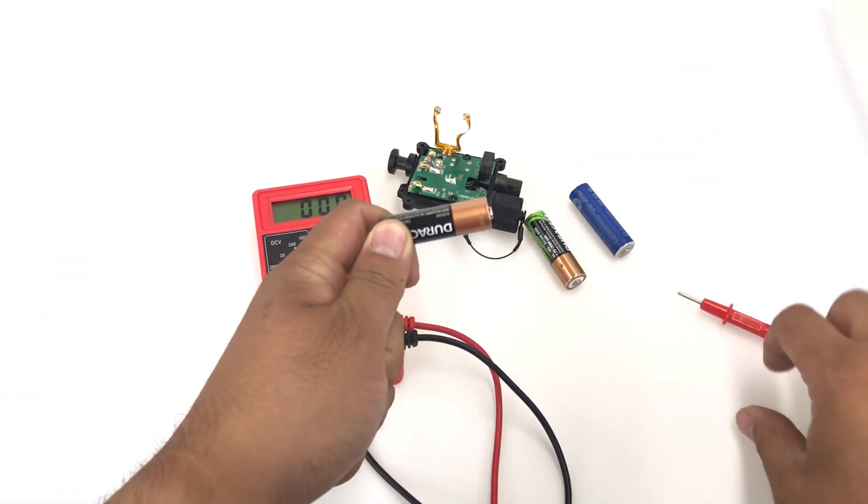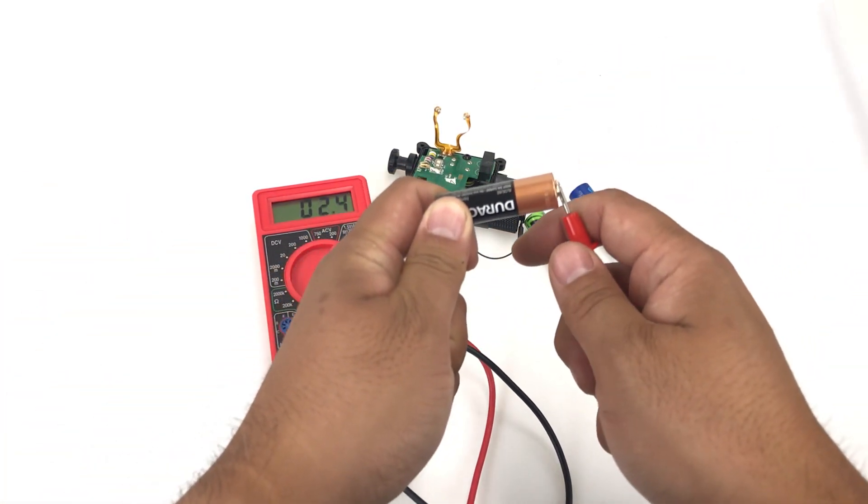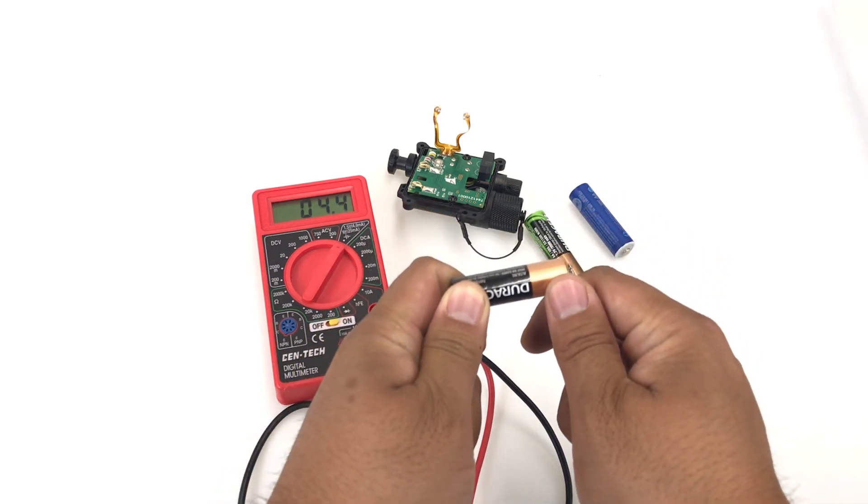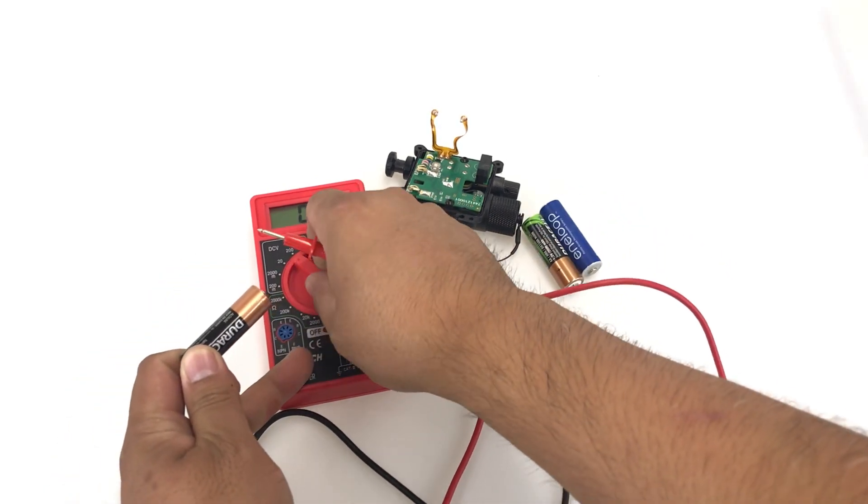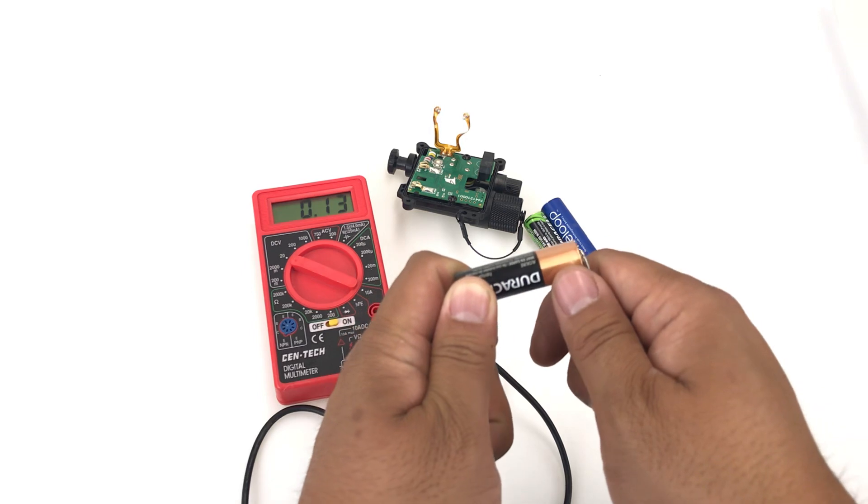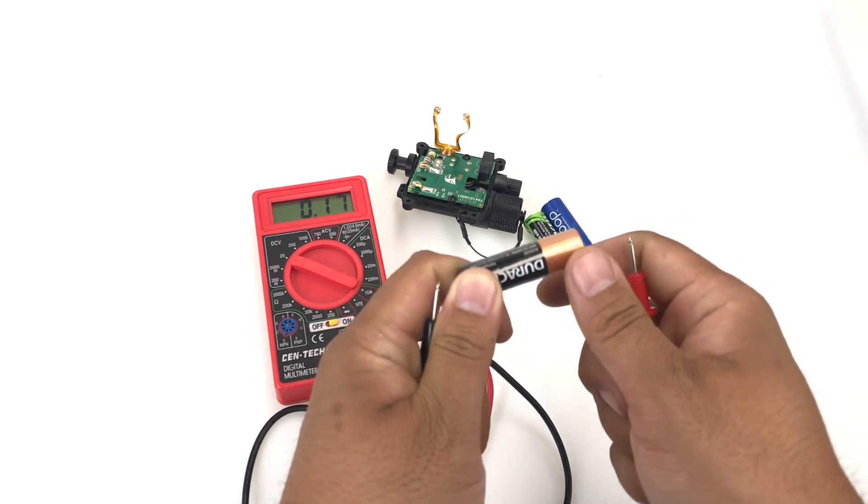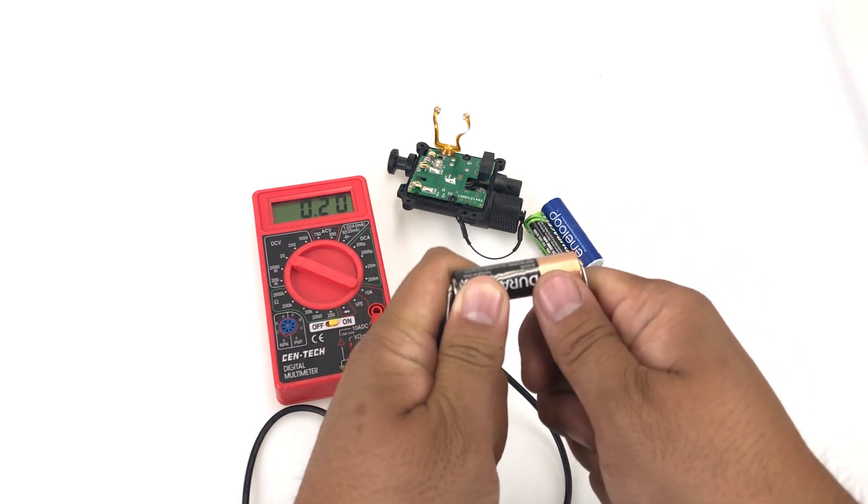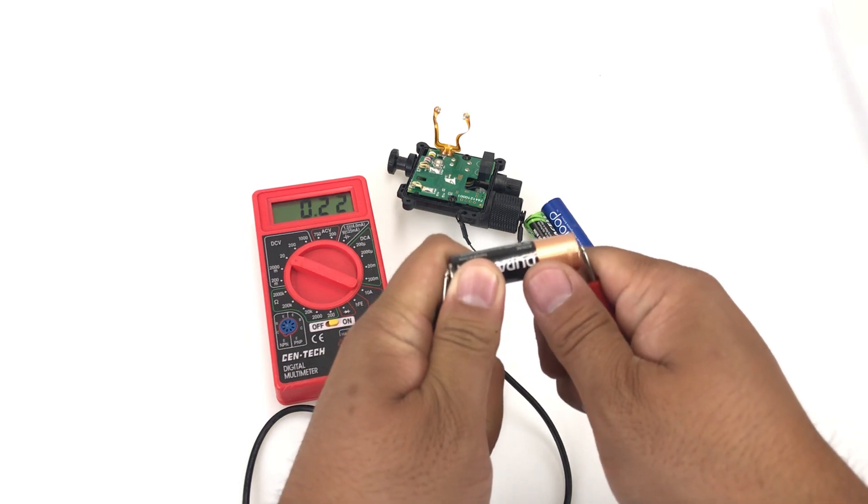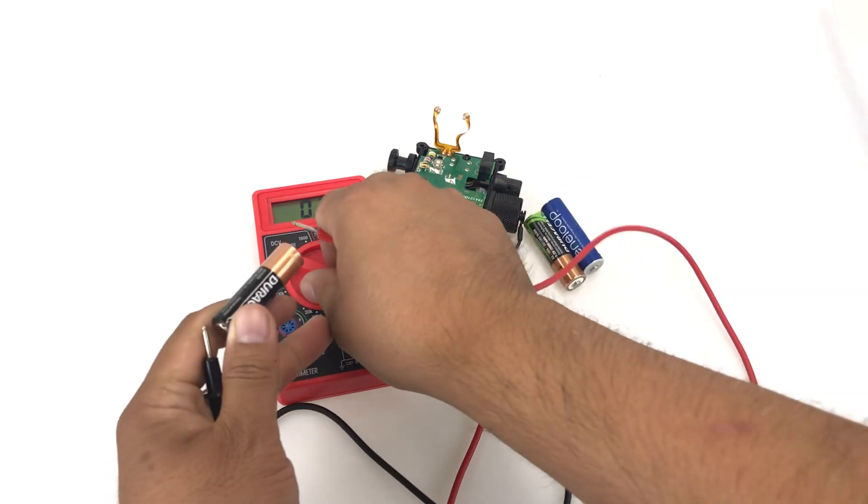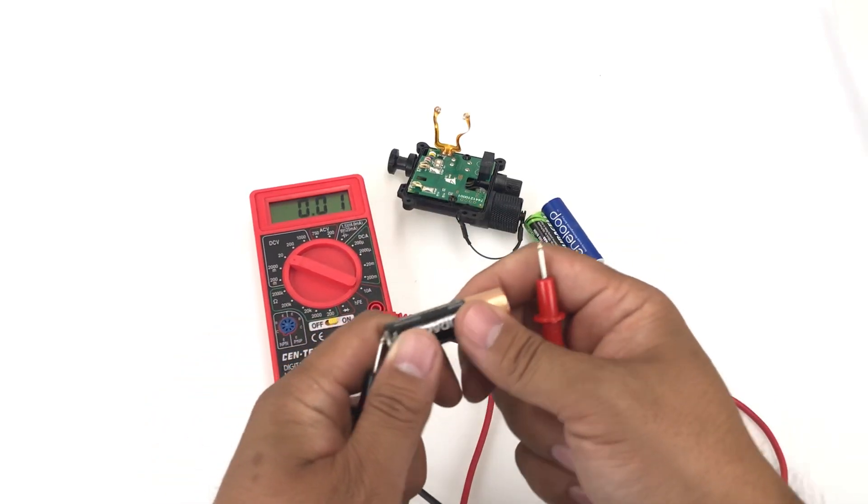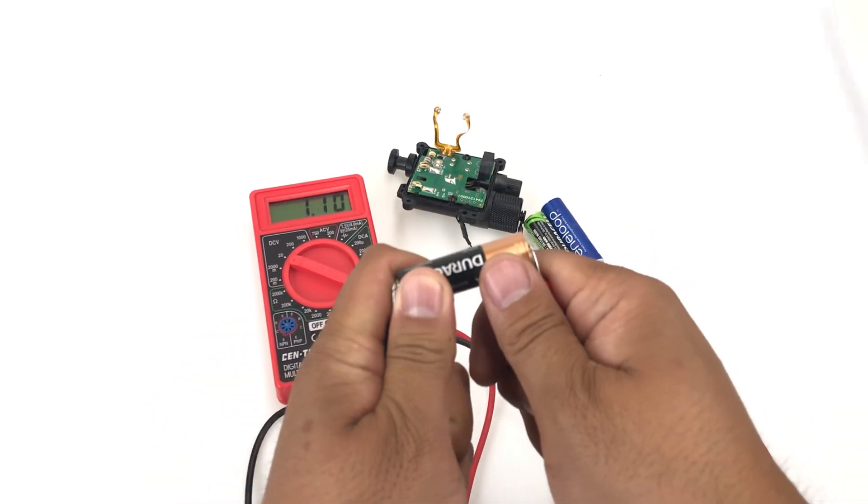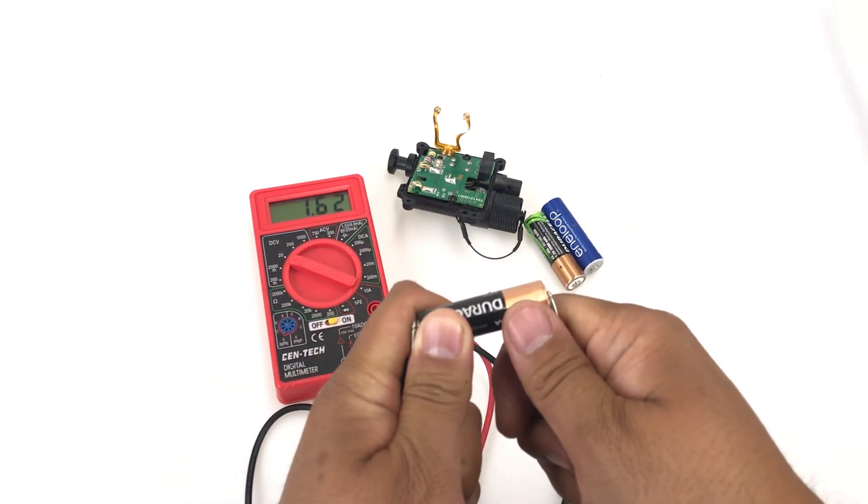A normal alkaline, this is a brand new Duracell. Oh whoops, I'm in wrong mode. Okay, brand new battery. Why is it at 2.2? What's going on? There we go. 1.62 volts.